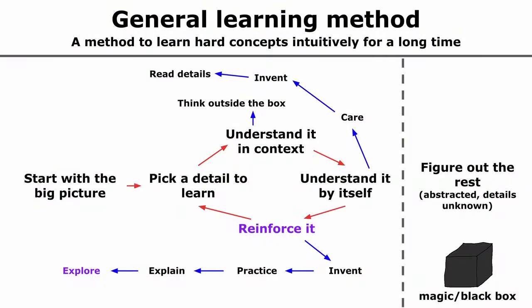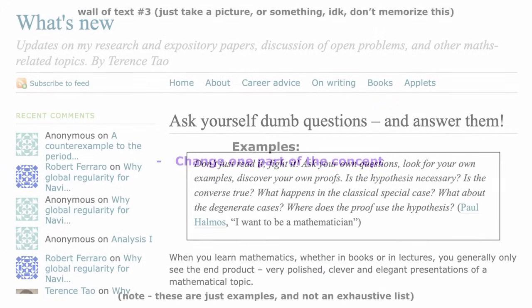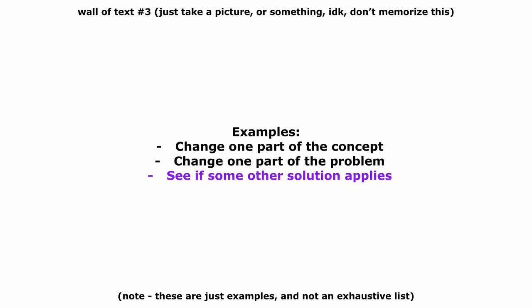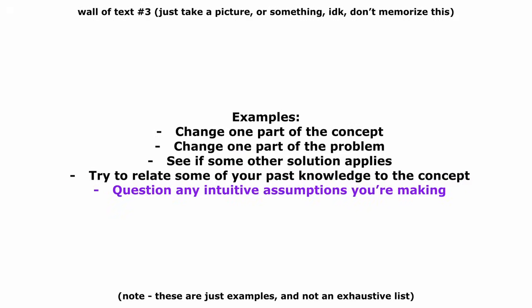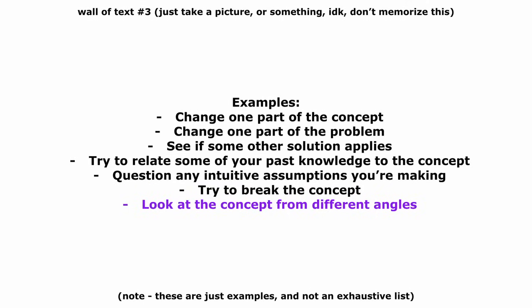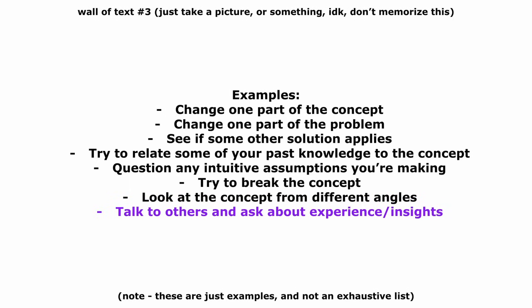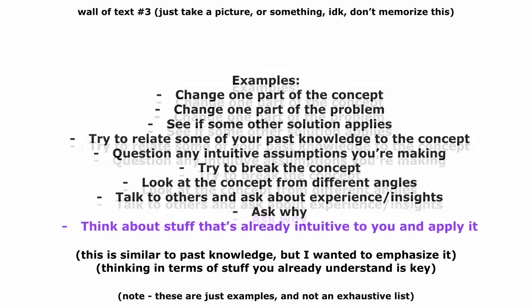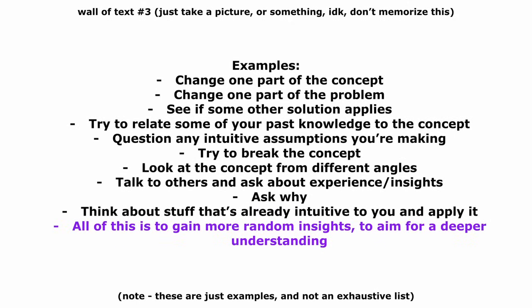And that final step is exploring. And what does exploring mean? I mean, you should mentally explore random variations of the concept. As the legend Terence Tao puts it, ask yourself dumb questions. Change one part of the concept and see if it still works. If not, figure out why it doesn't. Change one part of the problem and see if the concept still applies. See if some other solution applies to the same scenario and figure out why it does or doesn't. See if some past knowledge you had applies to this concept. Question any intuitive assumptions you're making about the concept and think harder about them. Subscribe to my channel. Try to break the concept. Come up with weird examples or counter examples and prove that it still works to see how it applies. Try to look at the concept from different angles. Try random stuff and see if it leads anywhere. Talk to others and explore the concept with them. Ask them about their experience with the concept and the insights they've come up with. And just ask, why? Why do we do this step? Why is this set up this way? You want to challenge every part of the concept. In general, just engage with the concept as much as you can. Think about stuff that's already intuitive to you and apply as much of it as possible. Your goal again is to have as many insights as possible to have a chance of gaining a deeper understanding of the concept. So do as much of this as possible.